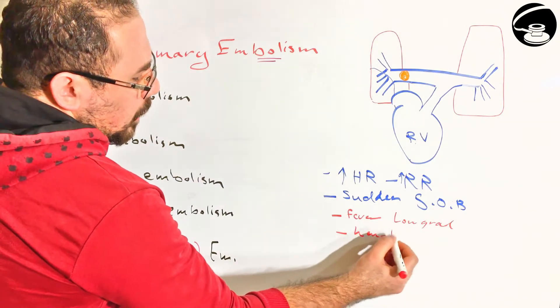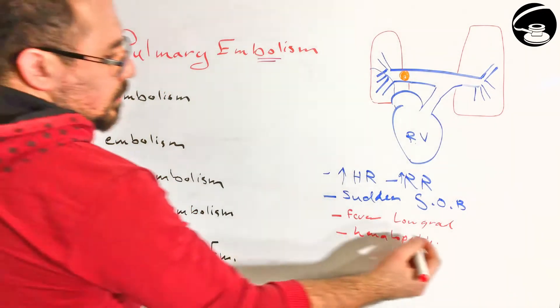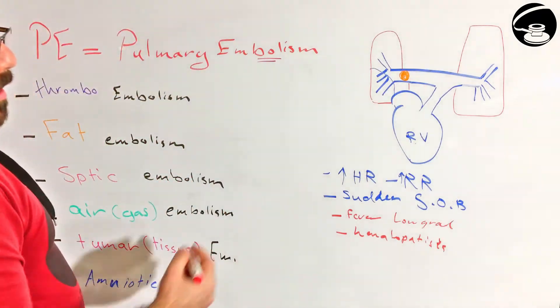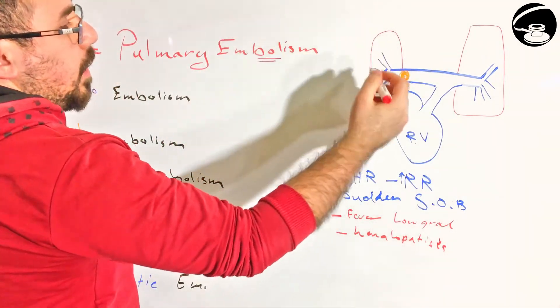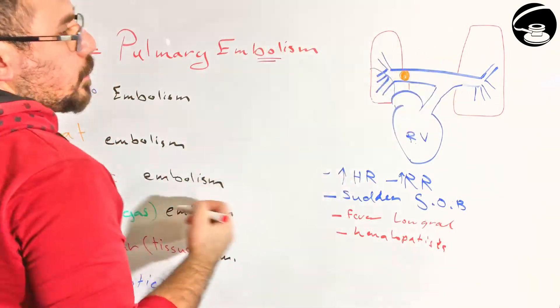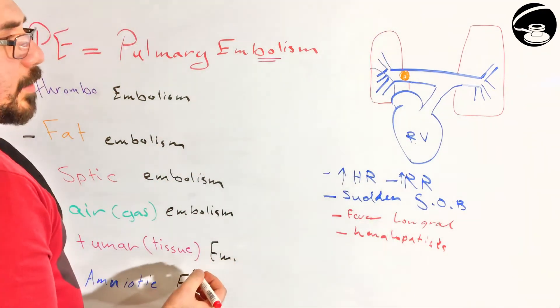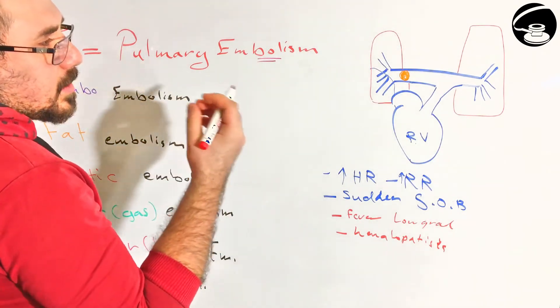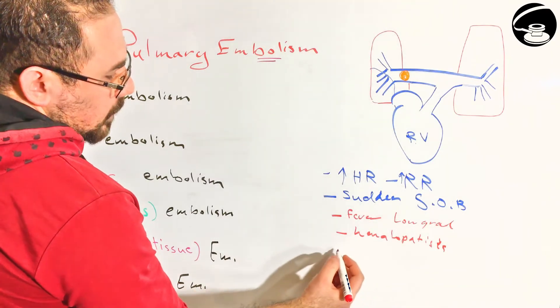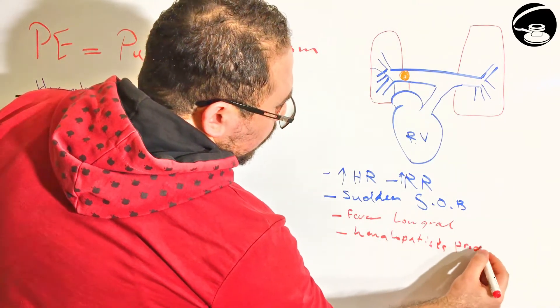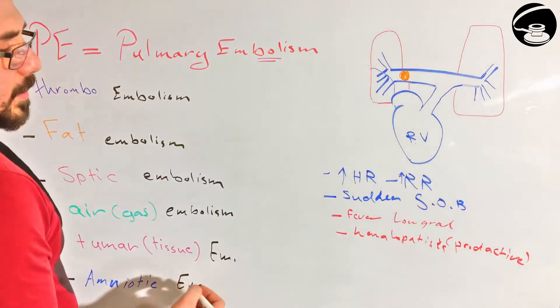Also you will find something called hemoptysis, which is basically coughing blood. Because that part of lung may die and throw blood into the bronchus, and then you cough blood. So you may find hemoptysis and you may have some kind of foamy sputum or foamy mucus with it. Sometimes the cough will be productive with mucus.